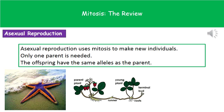You should have heard about the process of asexual reproduction. Asexual reproduction itself uses mitosis to make new individuals, so we only need one parent for asexual reproduction to take place. The key thing to remember here is that if we've only got one parent, then all of the offspring will have exactly the same alleles as the parent.